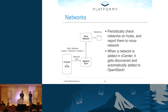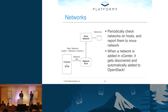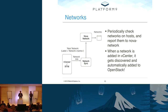Moving on from instances, we took a similar approach to discovering networks with a periodic synchronization task. For vCenter, this means discovering switches, port groups, etc. reported as part of the cluster. On the KVM side, we report Linux bridges attached to that hypervisor. The impact is that if a network is added to the hypervisor after initial deployment, it automatically gets discovered and reported to OpenStack as a new OpenStack network. This synchronization task continuously monitors for changes in both directions — if a network goes away, the database is updated; if a network is created, OpenStack is plumbed with the new network accordingly.